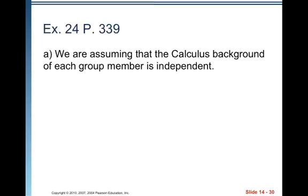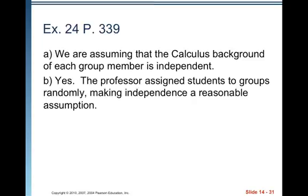What must be true about the groups in order to make that approach valid? Well, they have to be independent of each other where you're assuming that the calculus background of each group member is independent. Is this reasonable? Yes. The professor assigns students to groups randomly making independence a reasonable assumption.